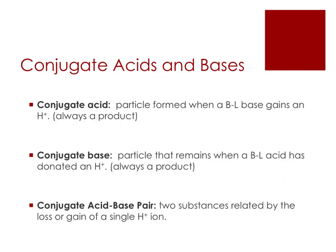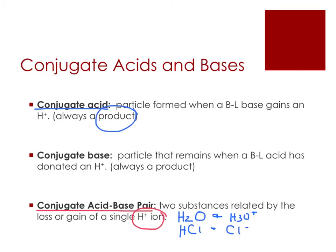This brings us to some new definitions. A conjugate acid-base pair consists of two substances related by the loss or gain of an H+ ion. The conjugate acid is the particle formed when a Brønsted-Lowry base gains an H+ — this is always a product. The conjugate base is the particle that remains when a Brønsted-Lowry acid has donated an H+ — this is also always a product. You may want to pause here to write down these definitions.